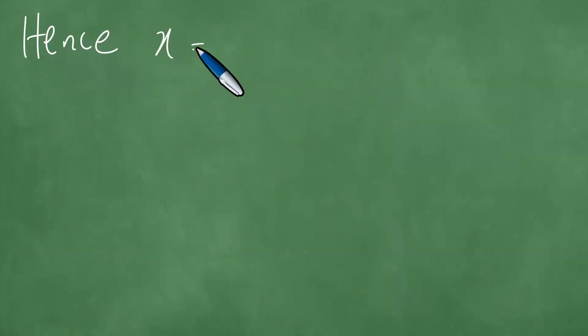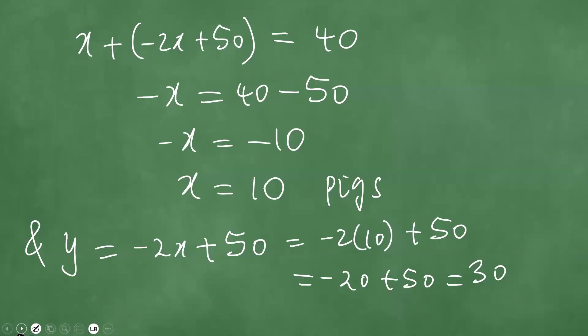Hence, X equals 10 pigs and Y equals 30 chickens.